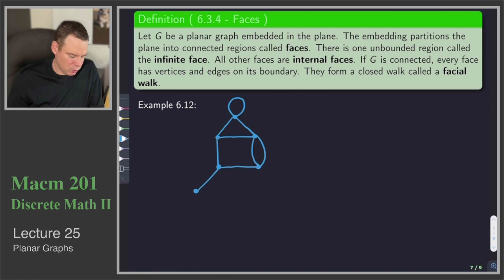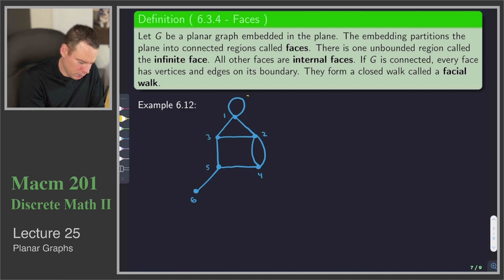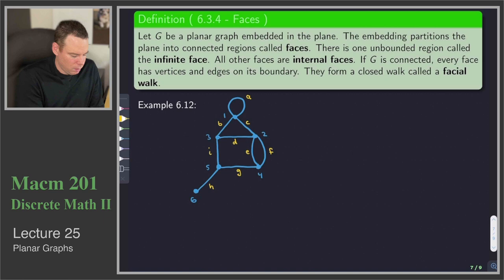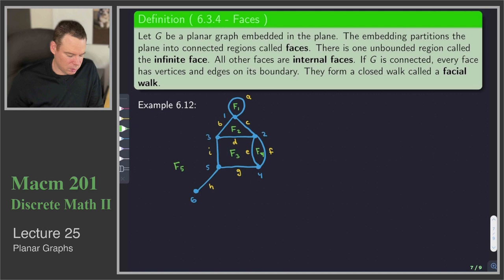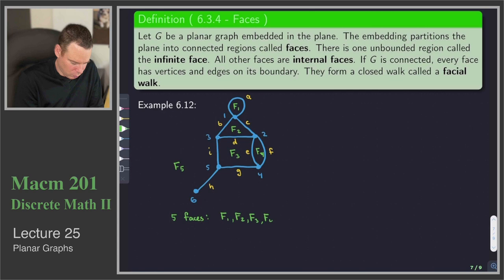Let's look at these terms in relation to a specific example. We've got a graph: a triangle, a couple of parallel edges, and a loop up here. We'll label the vertices 1, 2, 3, 4, 5, 6, and the edges A through I. What are the faces? The embedding splits up the plane into regions: there's the one inside the loop, the one inside the triangle, another face F3, one inside the parallel edges F4, and the infinite one F5. So we've got five faces: F1, F2, F3, F4, F5. F1 through F4 are the internal or finite faces; F5 is the infinite face.